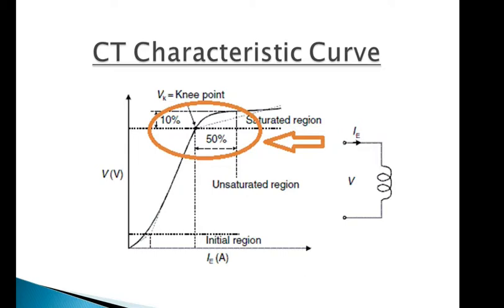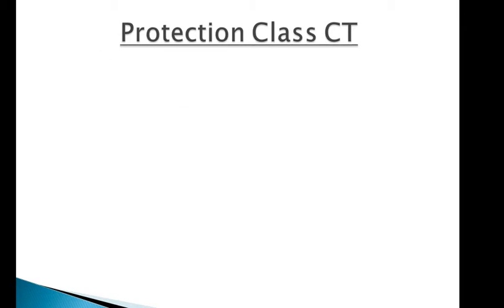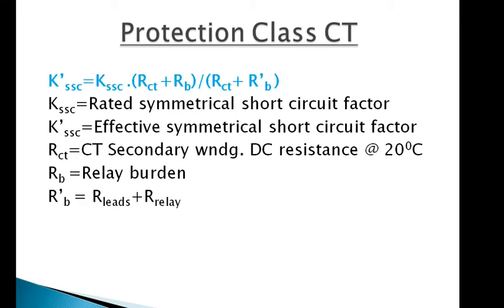IEC 60044 defines the criteria for protection CT so that the CT will not get saturated and will provide correct results. Hence, protection CT sizing calculation is very important in a power system network. Now I will discuss the protection CT sizing calculation or CT dimensioning as per IEC.